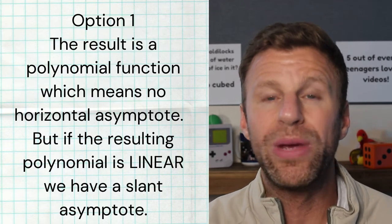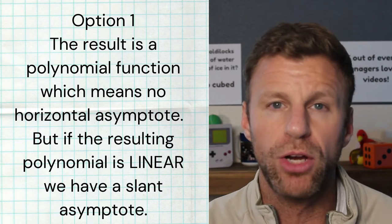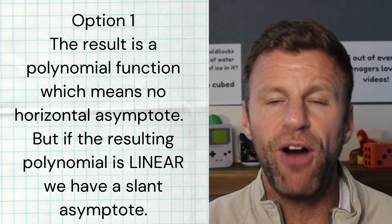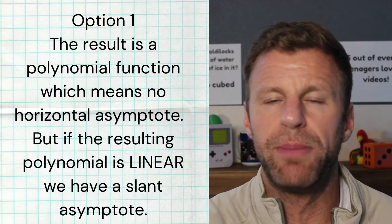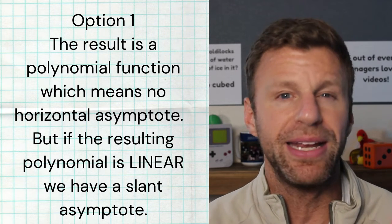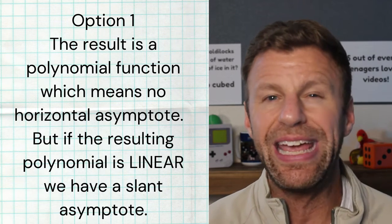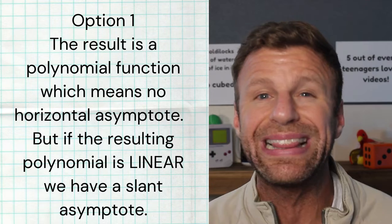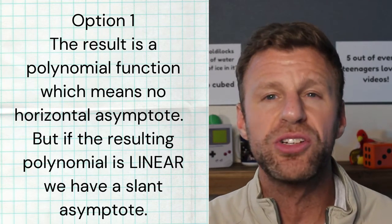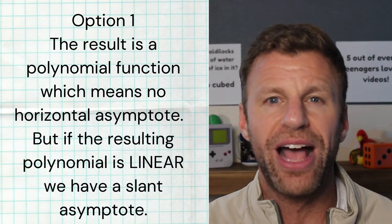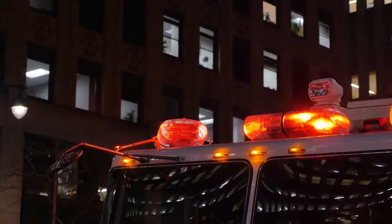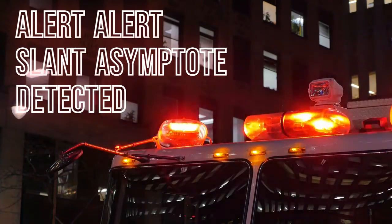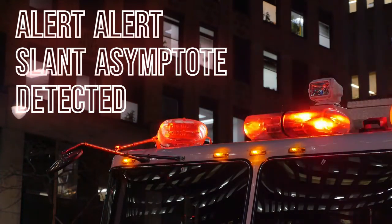First, we get a polynomial. The end behavior will follow that polynomial's end behavior. But here's the kicker — if that polynomial just so happens to be a linear polynomial, that is your sign, flashing red lights, that you have a slant asymptote in your rational function.